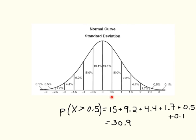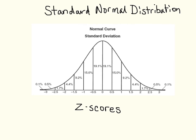You can do the same thing if you're interested in the probability that a score falls below 0.5, and you can do it for any score along the x-axis. In this standard normal distribution, the scores along the x-axis are z-scores. The z-scores are the scores along the x-axis of the standard normal distribution, which are in the form of number of standard deviations from the mean, which in the standard normal distribution is 0.